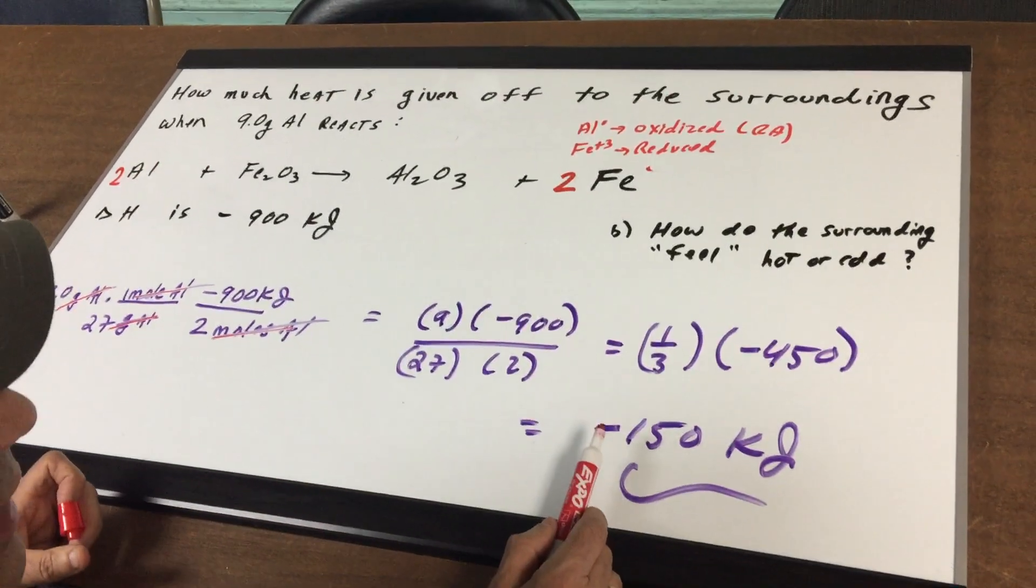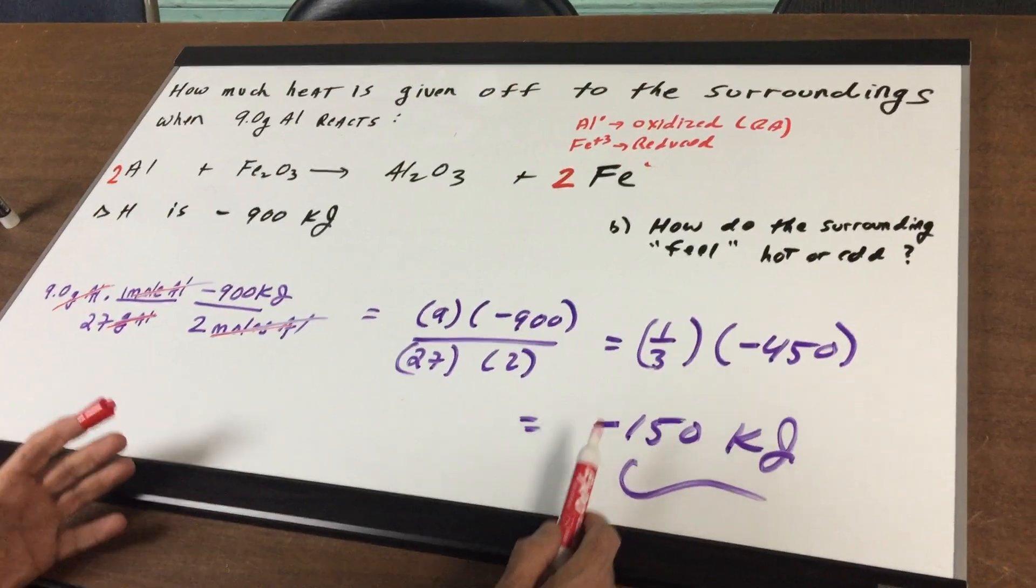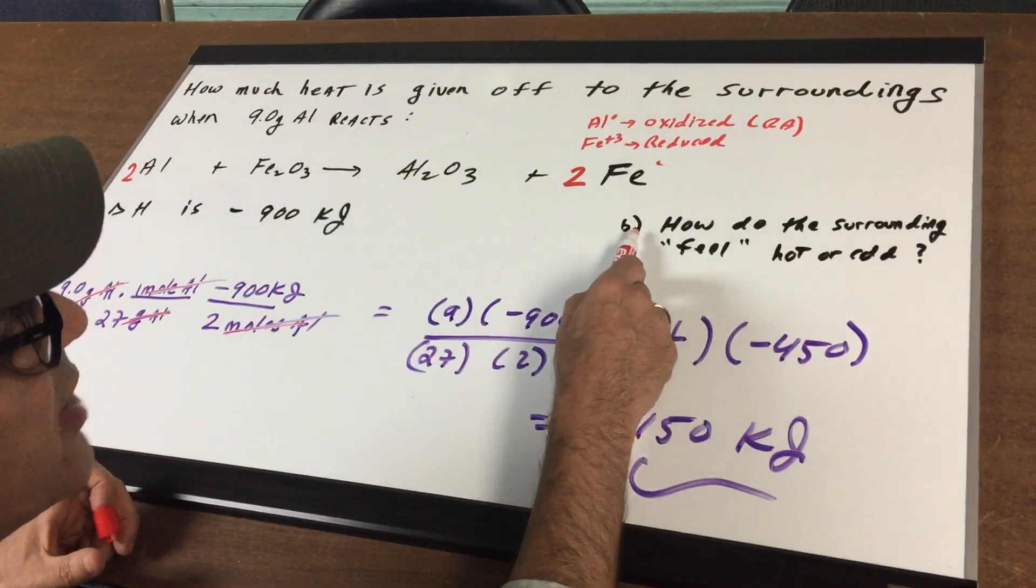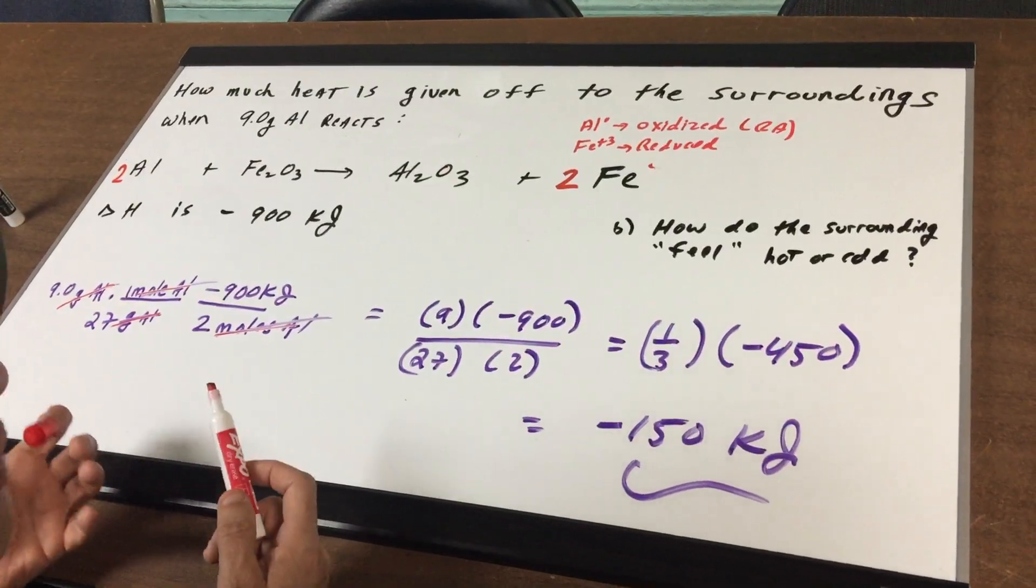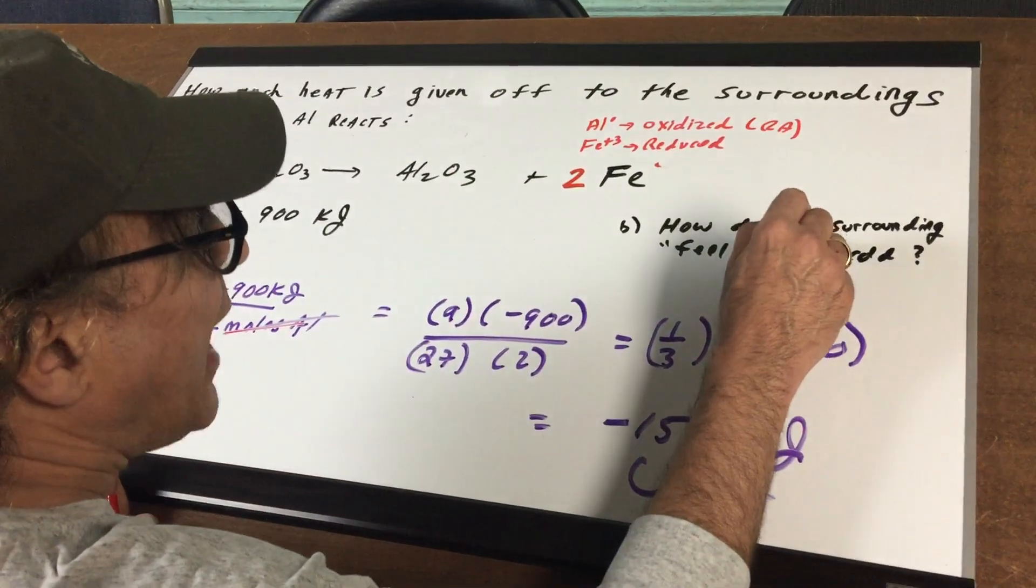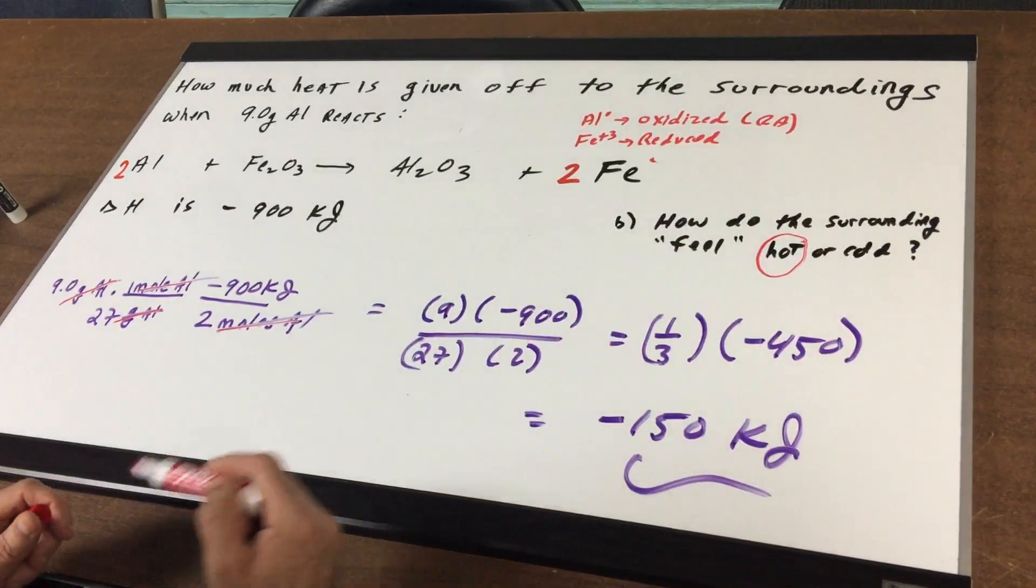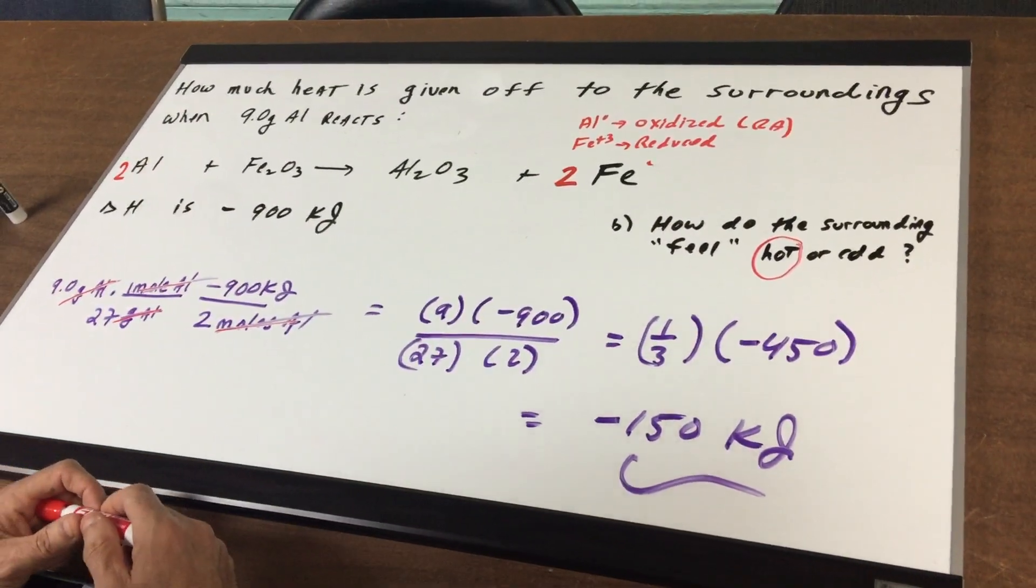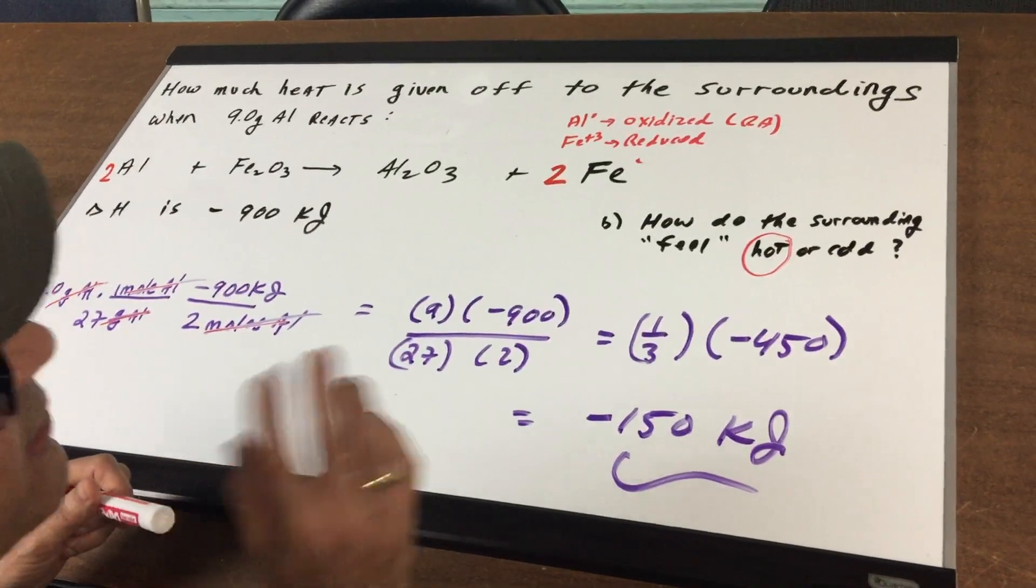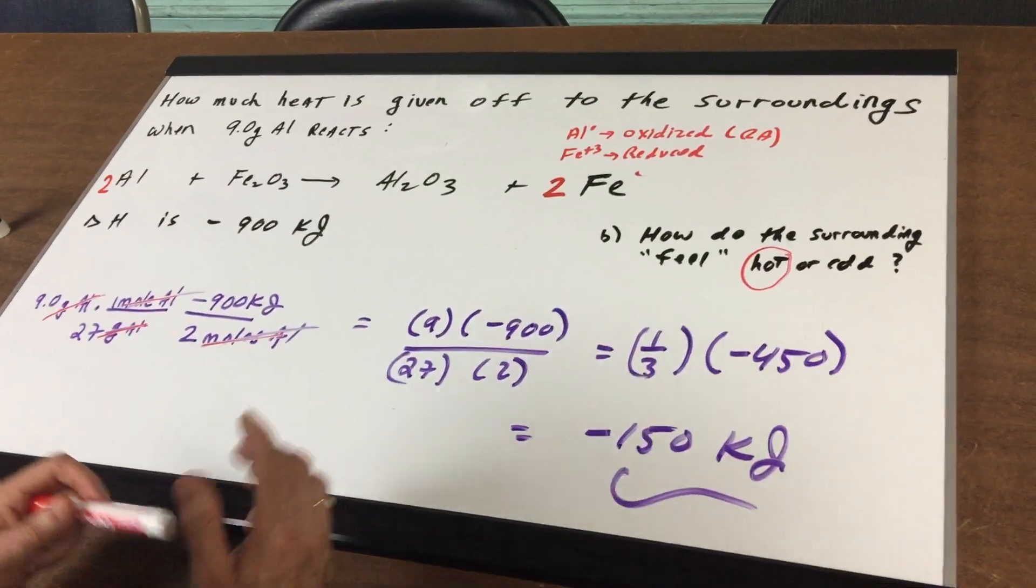Because it's negative, that means that it's exothermic, which brings me to part B. How do the surroundings feel, hot or cold? Because it's exothermic, the surroundings get hot. If something is endothermic, the surroundings will feel cold. That's a guaranteed DAT type of question.